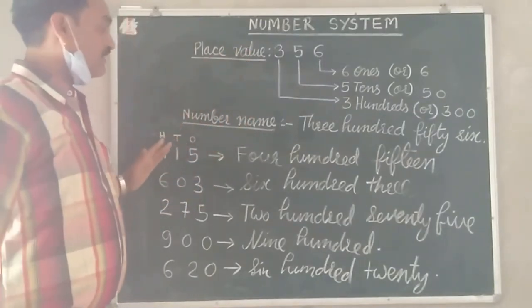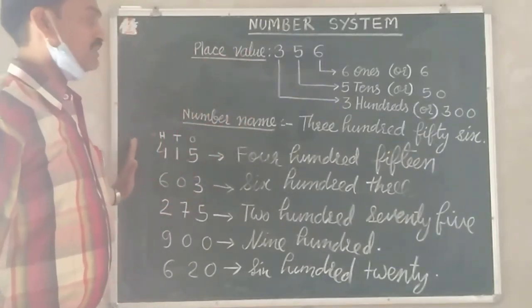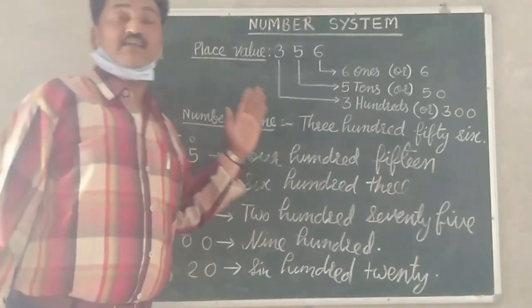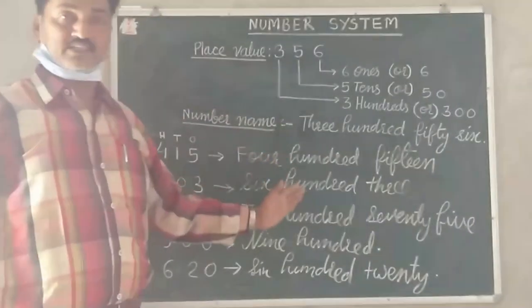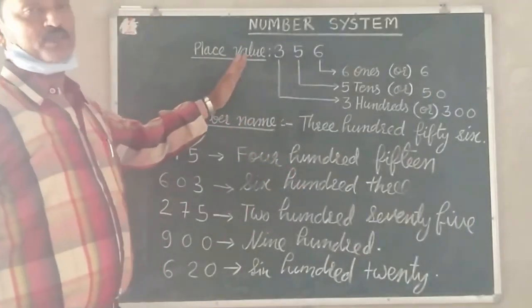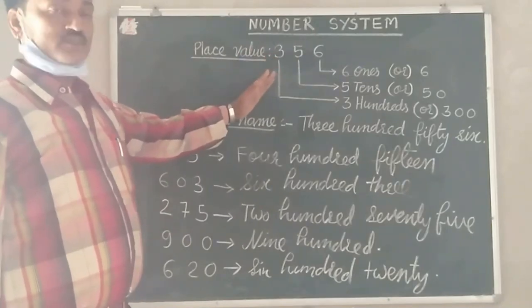So in this way, for numbers up to hundreds place, you can write the number if you know the place and place values. Thank you.